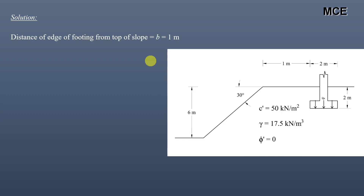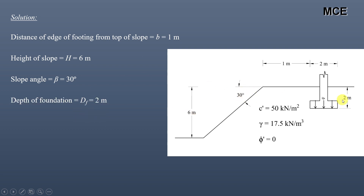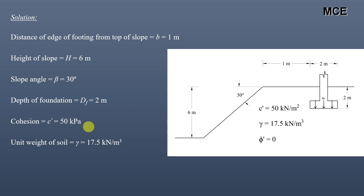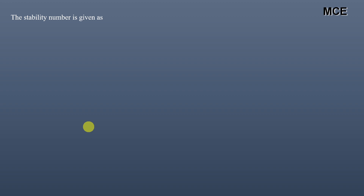The given values are: distance of edge of footing from top of slope (small b) = 1 m, height of slope = 6 m, slope angle = 30°, depth of foundation = 2 m, effective cohesion = 50 kPa, and unit weight of soil = 17.5 kN/m³. The stability number for slopes is given as Ns = c' / (γ × H), where c' is effective cohesion, γ is unit weight, and H is the height of the slope.